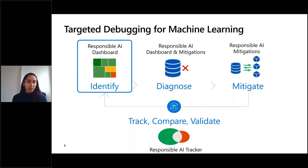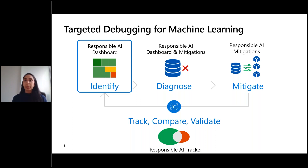Targeted debugging for machine learning generally involves four steps in a lifecycle. The first is identification — highlighting where errors are concentrated in an ML model, characterizing failure modes, and describing where the model is performing well and where it might be underperforming. With the tools in the Responsible AI Dashboard, you can take a deeper look at which data groups might be causing lower performance and address those specifically.